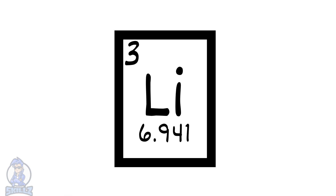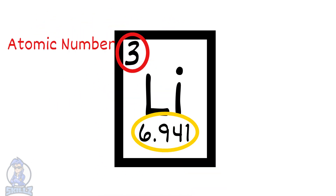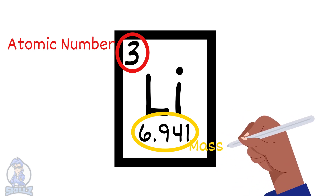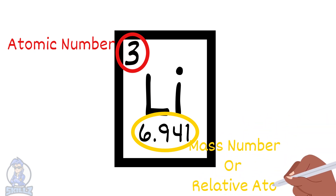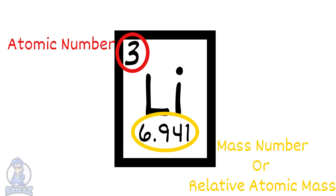If you look closely at the periodic table, there will be two numbers along with the symbol. The smaller number would be the atomic number. The other number could be the mass number of the most common isotope or the relative atomic mass. Don't worry if you don't know what relative atomic mass is — you can find out all about it in the next video.